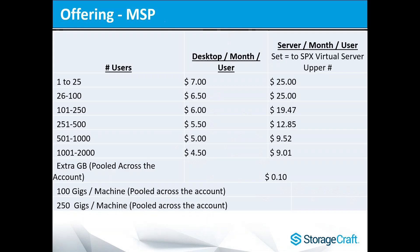For partner pricing, it's based on the devices being backed up, pooled across the entire partner account. We give 100 GB per device for desktops, pooled across the account. So if you had seven desktops, you'd be charged $1 per device — $7 per month, or $49 total — and those seven machines would be able to use a combined 700 GB of data across potentially multiple customers. That's actually pretty terrific.